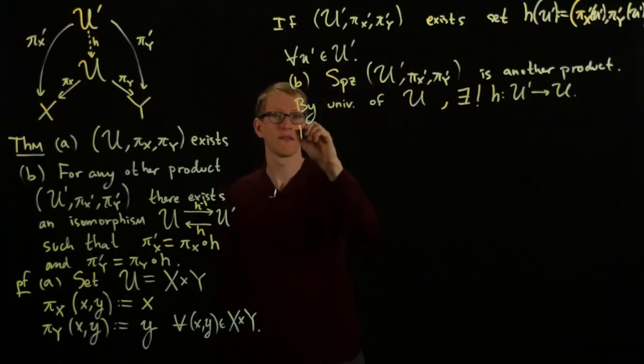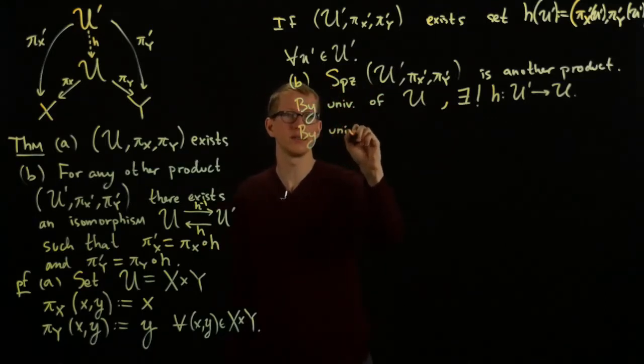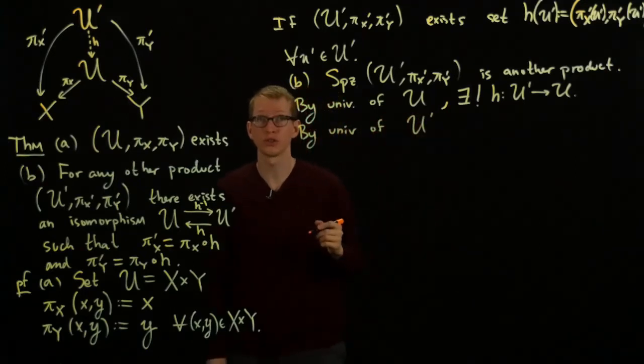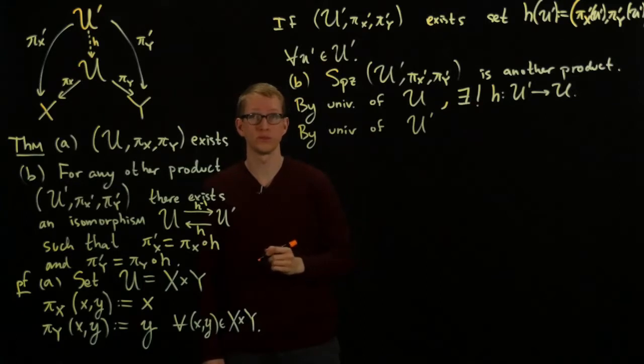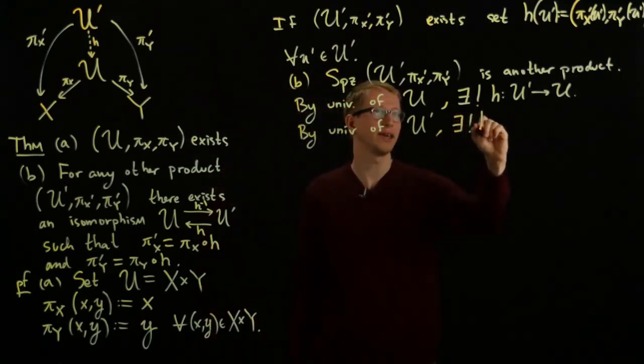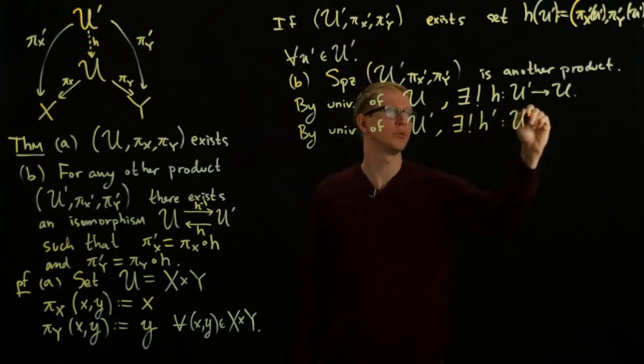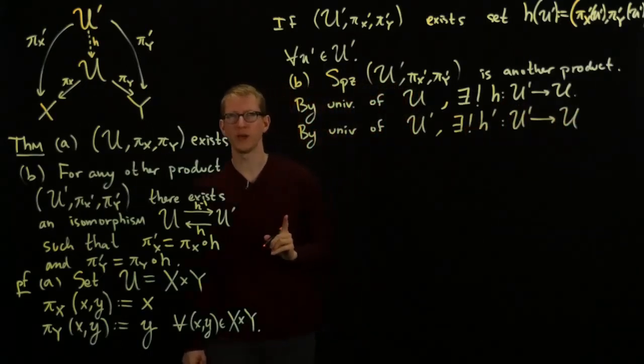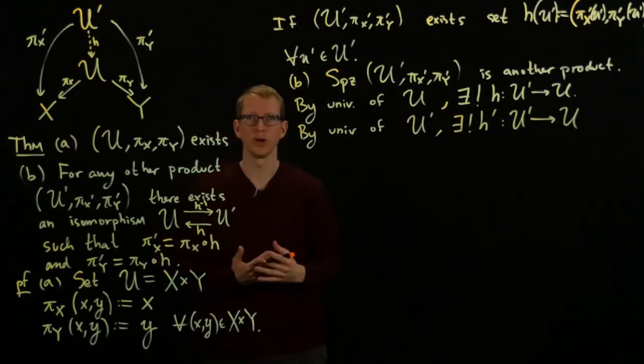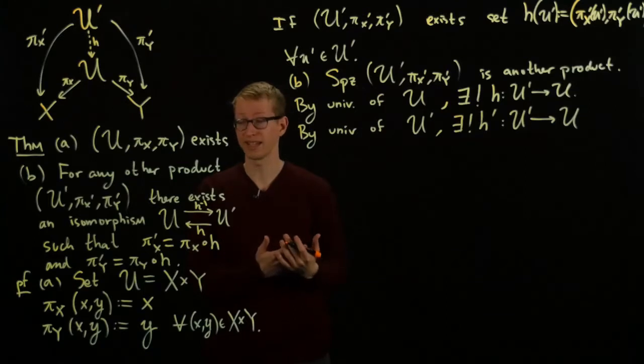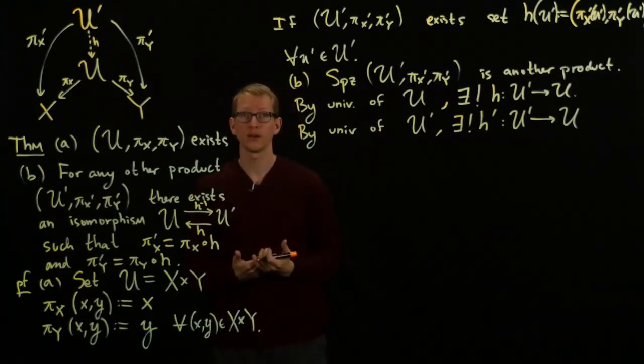Similarly, by universality of U prime, since we're assuming that U prime with its projections is also a product, there exists a unique H prime from U to U'. So we have these two maps that go between U and U prime, and we want to show that these maps are in fact inverses of each other. So how can we do that?